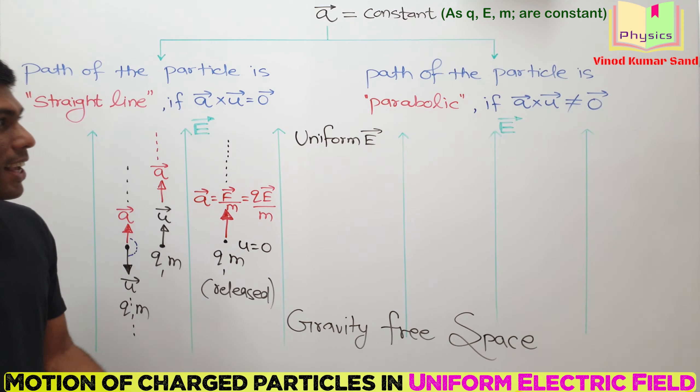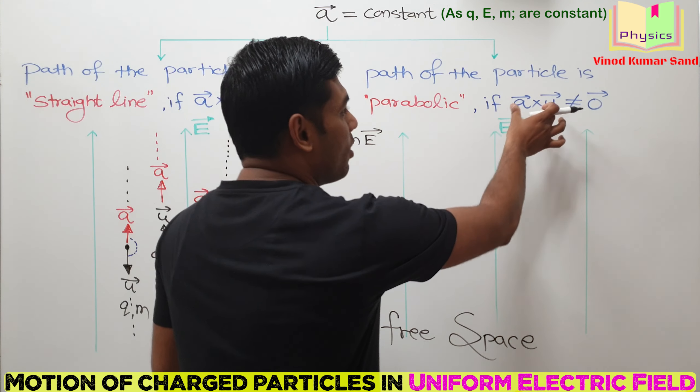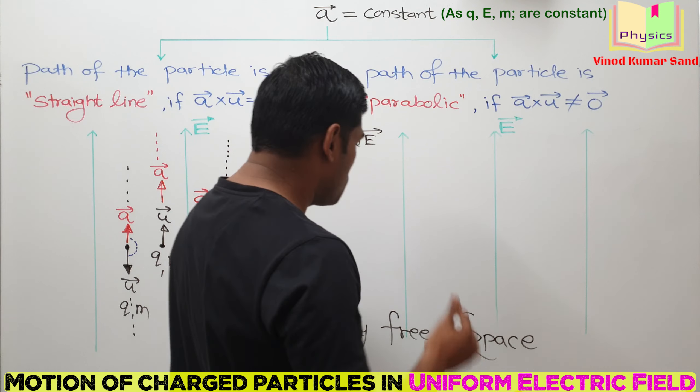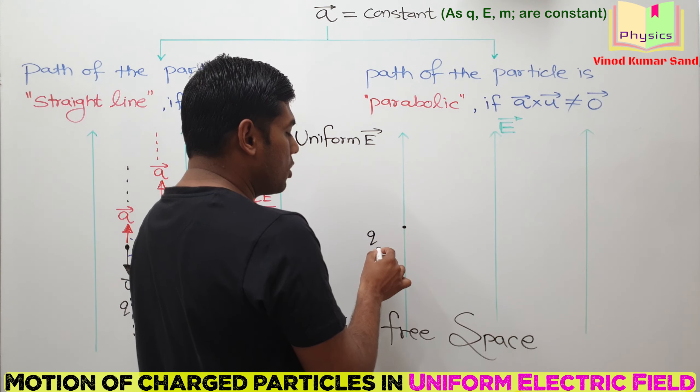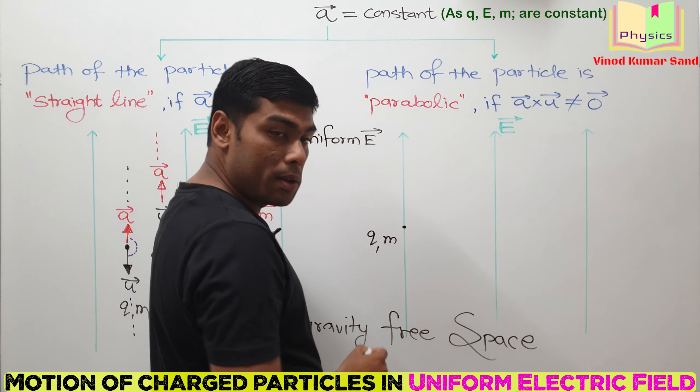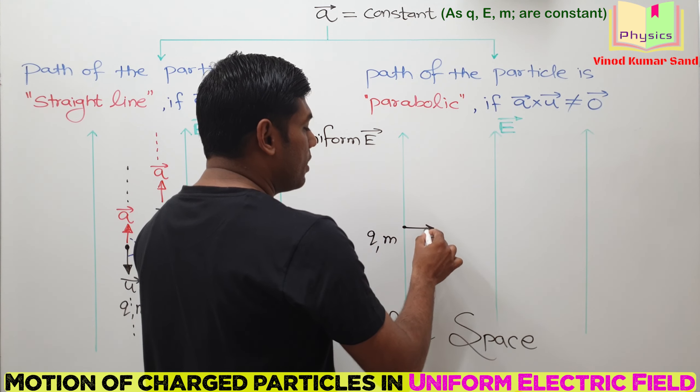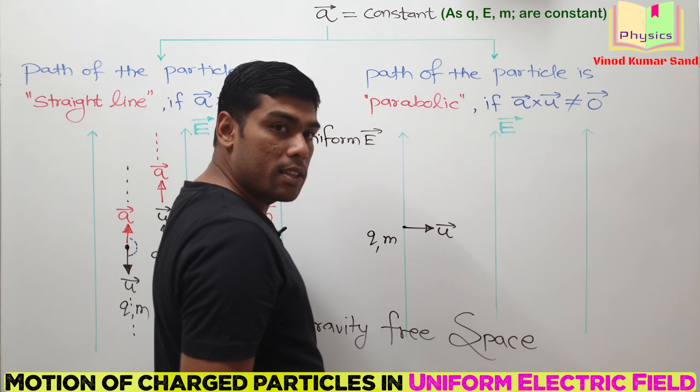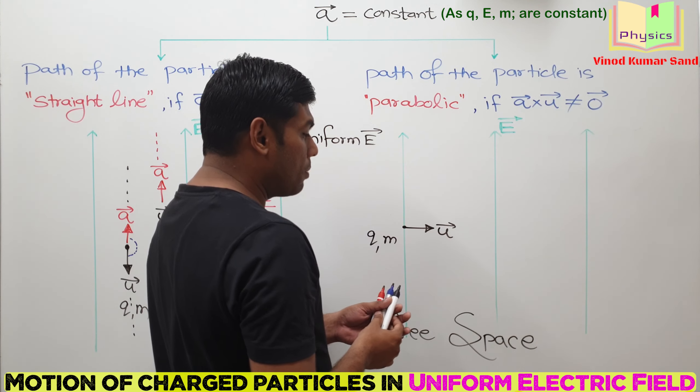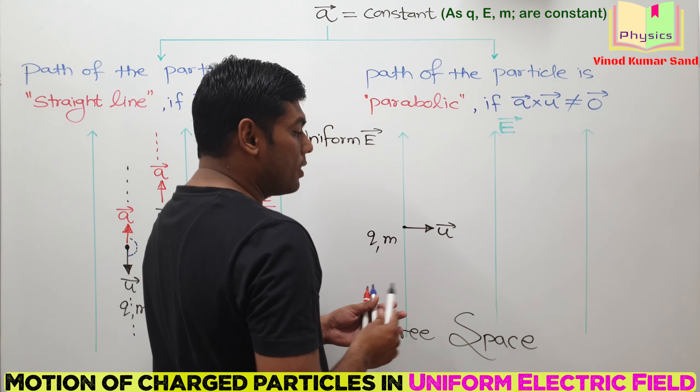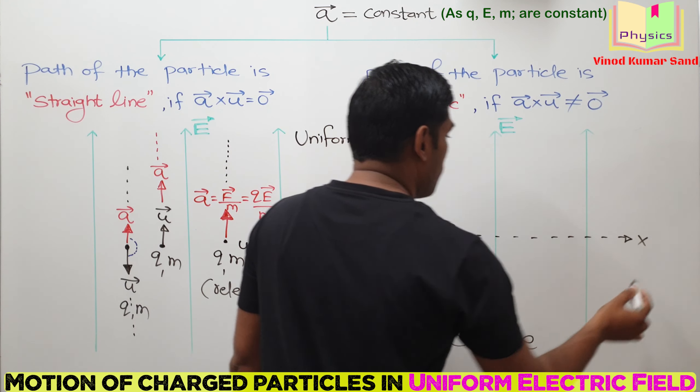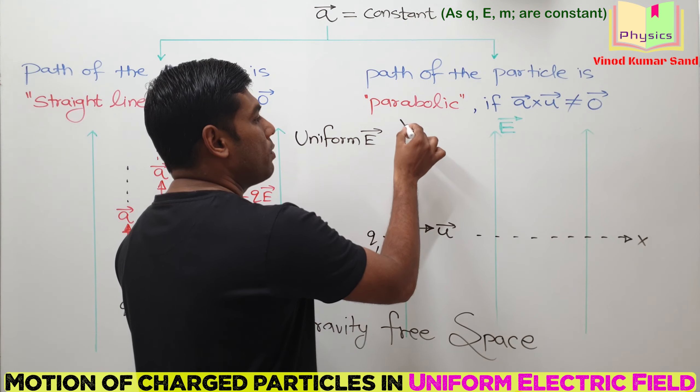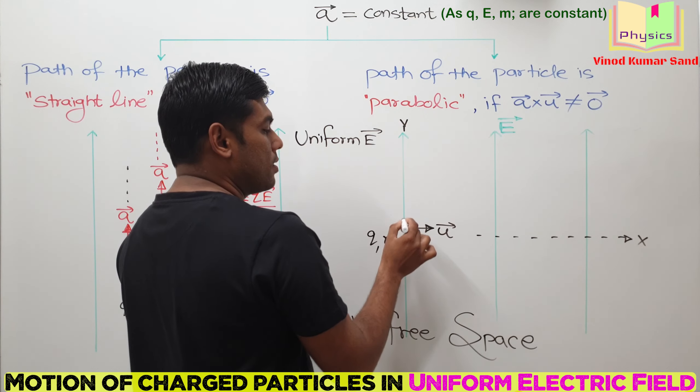Let us move to the next case, when A cross U is not equal to zero. Here again, I am considering a charged particle having charge Q and mass M. Let us say it is given initial velocity in this direction. For calculation purpose, we are considering this direction as the x-axis, and this vertically upward, we are taking as the y-axis.